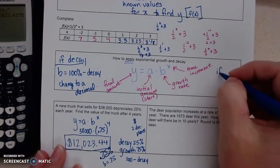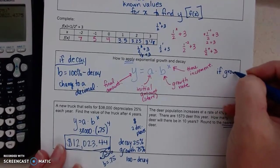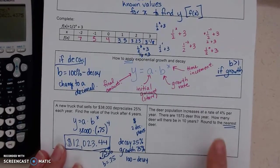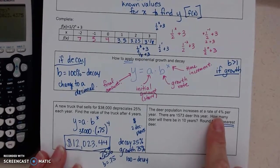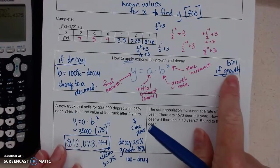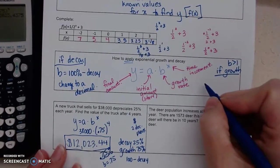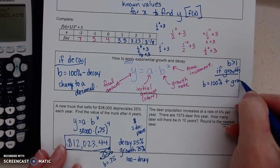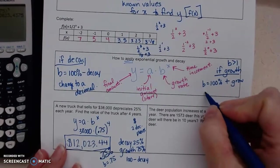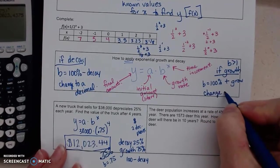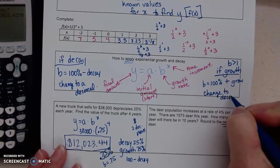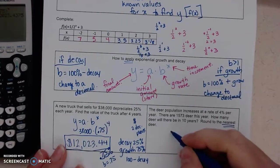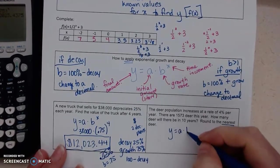Okay, now growth. Growth, we learned that growth, our base needs to be bigger than one. So in order to get, I know I'm growing 4%, but in order to get something to be bigger than one, we're going to take that 100% and we're going to add how much it's growing. And then once again, we always change to a decimal by moving it two places to the right or dividing by 100.